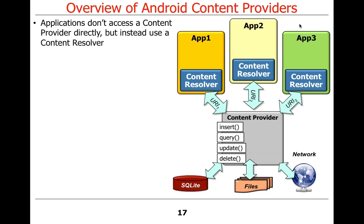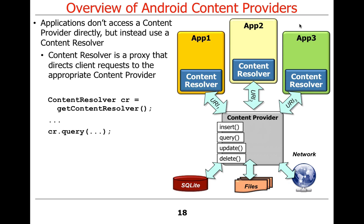Ironically, even though content providers are one of the four core components in Android, we don't access them directly. Content providers are always accessed indirectly via something called a content resolver. You call getContentResolver(), which is a built-in factory method that returns the content resolver. You get back a proxy to the content provider, and then you pass in information identifying which content provider you're accessing based on its authority.